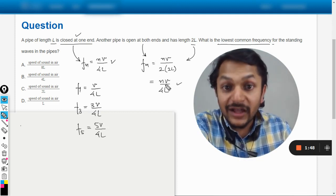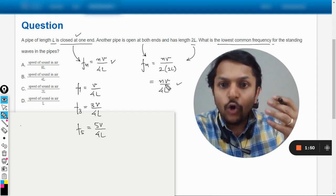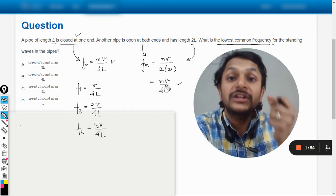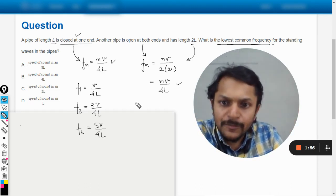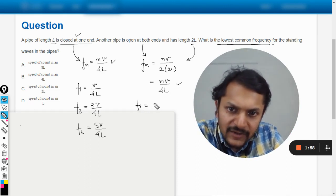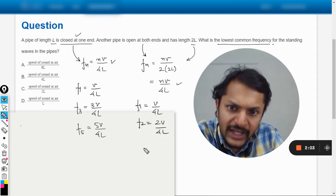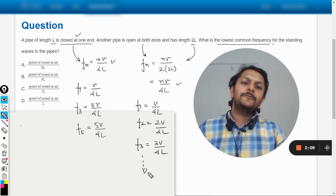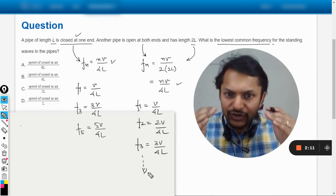F3 is 3V/(4L), and likewise you can keep going. The frequencies are now getting multiplied by higher harmonic numbers, so the values keep increasing. Now the question asks about the lowest common frequency.